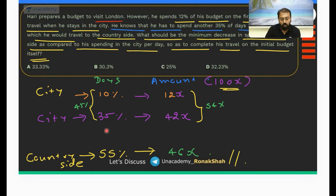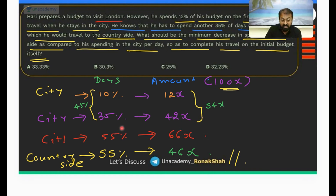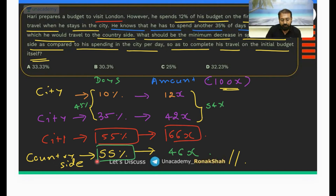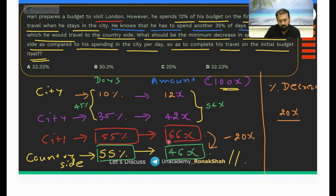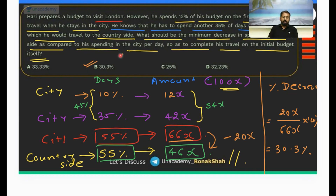In the city, for 35% of the days he spent 42x. So for 55% of the days in the city, how much would he spend? He would spend 66x. While in the countryside for 55% of the days he will spend only 46x. So the drop is 20x. The percentage decrease in expenditure in the countryside compared to the city is 20x over 66x, which comes out to be 30.3%.